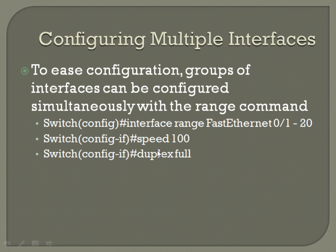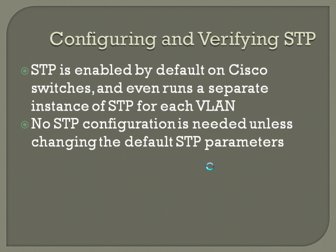STP is enabled by default on Cisco switches and runs a separate instance of STP for each VLAN. No STP configuration is needed unless you're changing the default STP parameters. That won't be the case when getting into rapid spanning tree or multiple spanning tree, but for standard spanning tree it's already enabled unless you're doing something specific, like lowering your timers because you have a diameter less than 7.